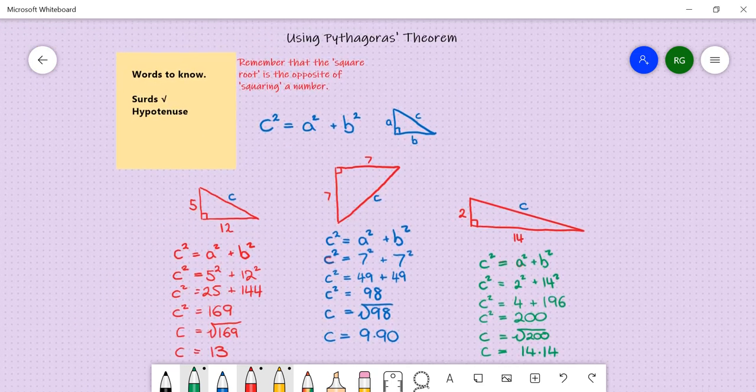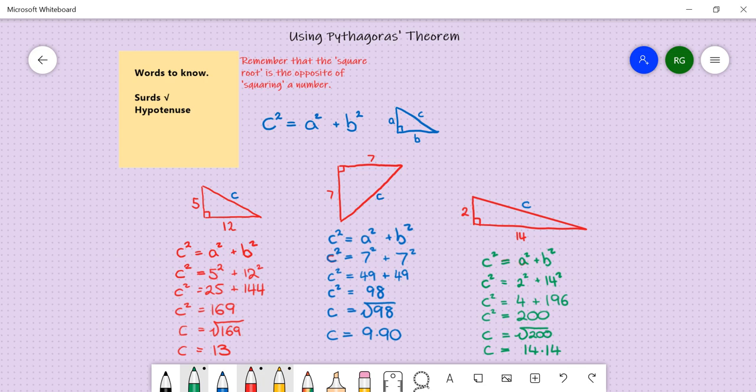Now, that formula, as it's written, only works for the hypotenuse length. In the next lesson, we'll talk about how to find one of the shorter sides if you've been given the hypotenuse. Thank you for listening.